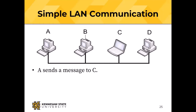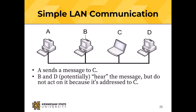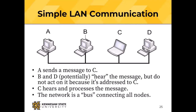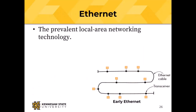In a simple LAN — the way we used to build them — when A sends a message to C, B and D potentially hear it but don't process it since it's addressed to C. Early Ethernet worked just like that: an Ethernet cable with transceivers (a portmanteau of transmitter and receiver). This is still the prevalent local area networking technology, though we no longer build them this way.